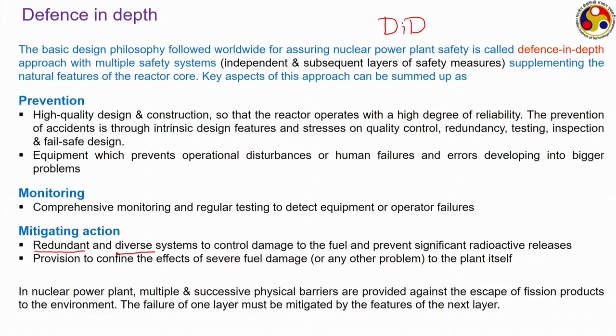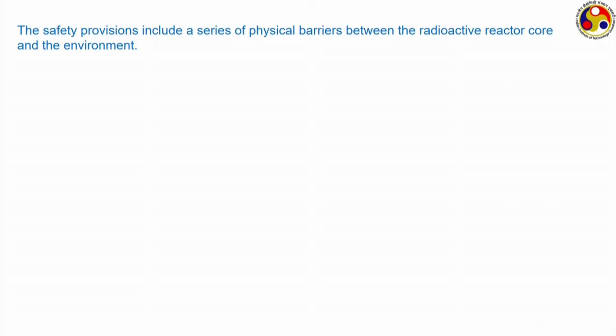In a nuclear power plant, multiple and successive physical barriers are provided as part of DID, theoretically preventing any radioactive leakage to the surroundings. The failure of one layer is designed to be mitigated by the next one. There are generally four levels of barriers in a conventional reactor. The first barrier is the solid ceramic fuel pellet itself.